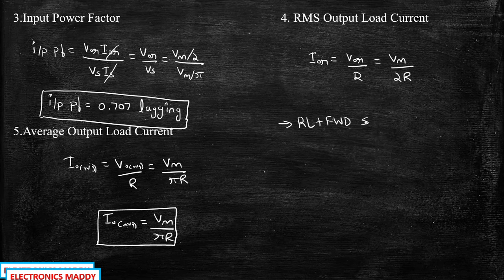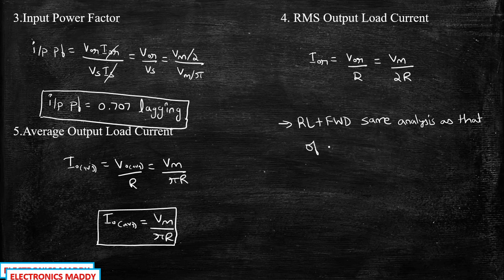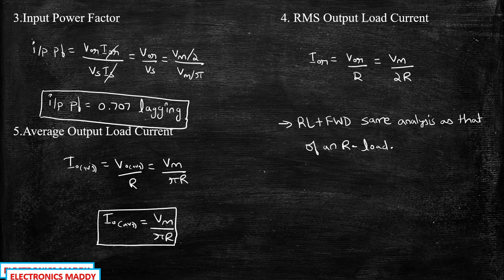As a whole, the analysis for an RL load with freewheeling diode follows the same approach as that of a purely resistive R load — and the reason is that the vout waveform is identical for both cases. This is how you analyze a half-wave rectifier with RL load and freewheeling diode. If you have any questions, feel free to type them in the comment section below. Thanks for watching, stay tuned.